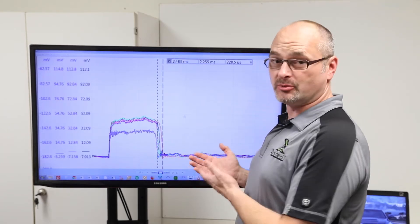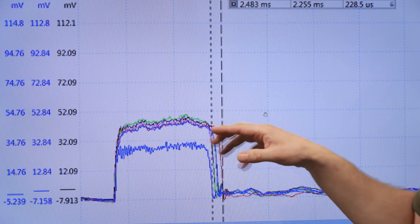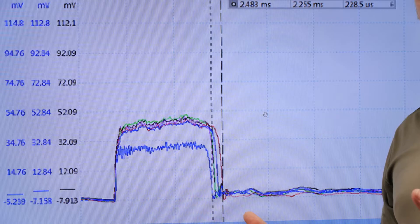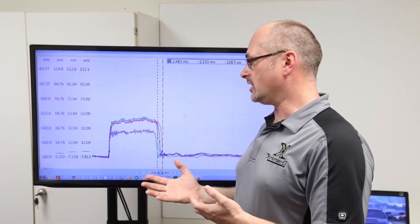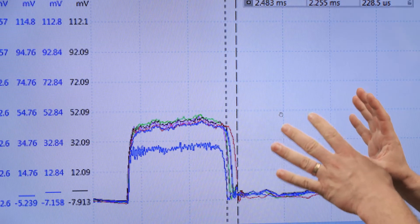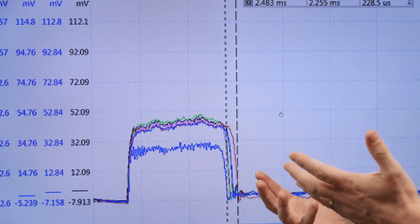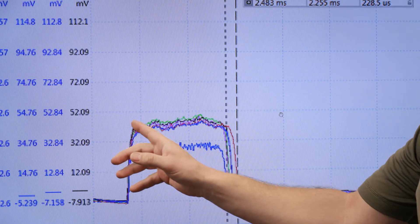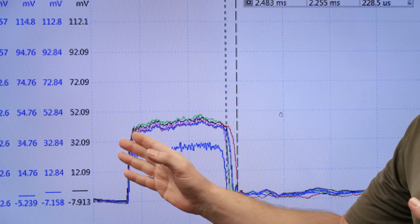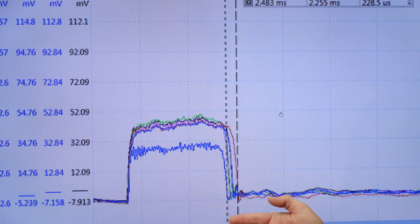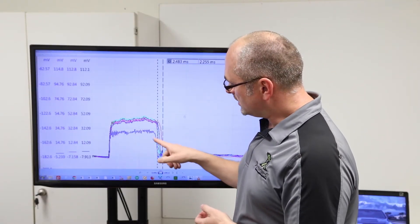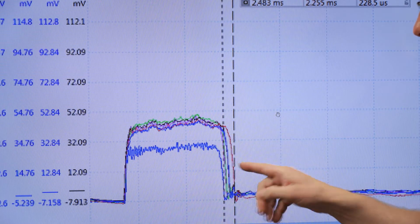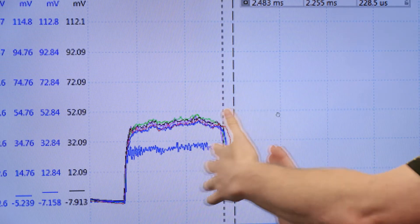This is a measurement of a competitor set. This bundle of squiggly lines, that's each of these eight injectors. The blue line is a factory injector before modification. What you can see here, like I told before, you want them to rise at the same time, to open at the same time, and you want them to close at the same time. In this particular set that we have measured on our equipment, you can see that each of these eight injectors closes at a different time.